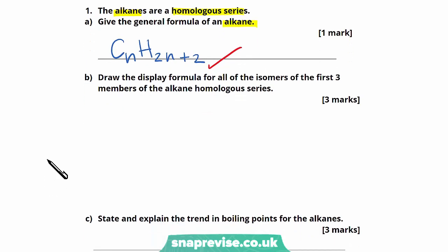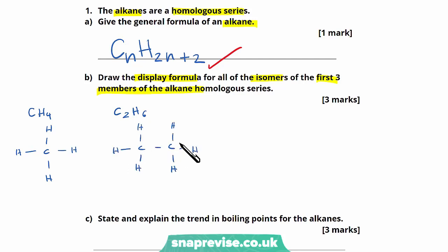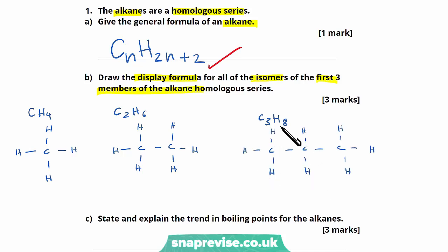Moving on to part B, we're asked to draw the display formula for all of the isomers of the first three members of the alkane homologous series. We can start with the first member, which we know will be CH4 — methane. The display formula will look something like this. The second member will be C2H6, ethane — we've got our two carbons and then our hydrogens. And the third member C3H8, propane, with our three carbons and then our hydrogens. There's no other way we could organise those carbons in our different members, so that is all we need to do.